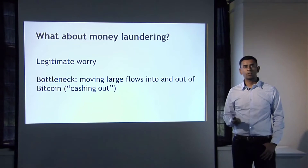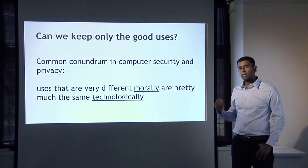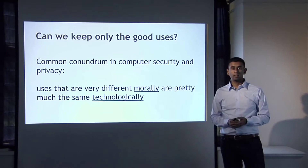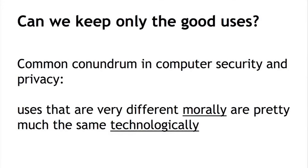One could ask: can't we design technology so that only the good uses of Bitcoin anonymity are allowed? This turns out to be a common conundrum in computer security and privacy. The different uses we perceive as morally very different are going to be almost identical technologically. If we want to encode moral rules into the technical rules of the system, it's not even clear how to do that. Hence the recommendation of separating the technical anonymity properties of the system from the legal principles put on top of it.